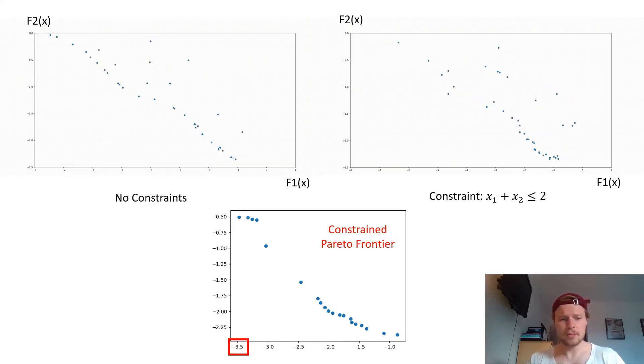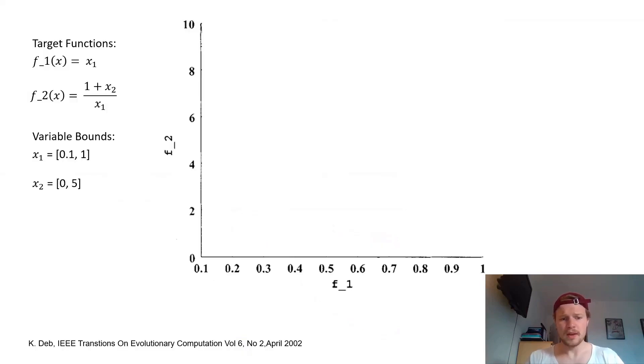So let's go more into detail a bit why this happens and to see how we can handle these constraints in our NSGA2. Imagine we have two other target functions here, F1 and F2. And besides these functions, our X1 and our X2 has also different boundaries. And if I would just run my NSGA2 unconstrained, my Pareto frontier would look like this approximately.